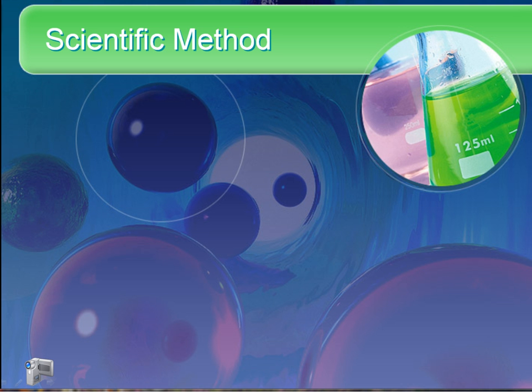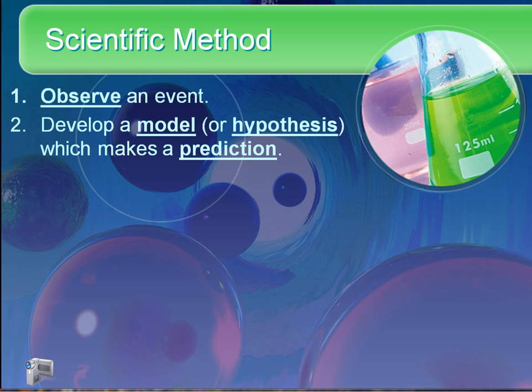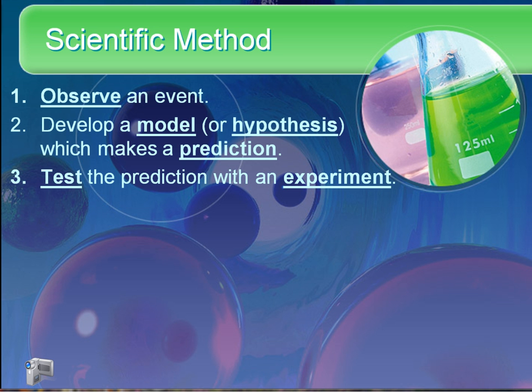Now you've seen the scientific method before. First, we observe some sort of an event. Next, we develop a model, a hypothesis, which makes a prediction as to how or why that event occurred. We test that prediction with an experiment. So our hypothesis has to be testable, and then we run an experiment. This is the base of all science.